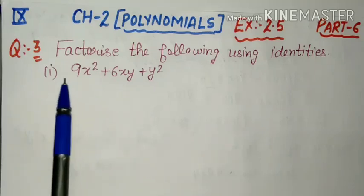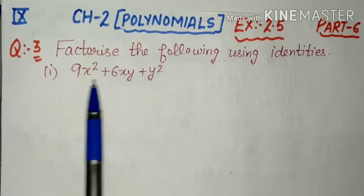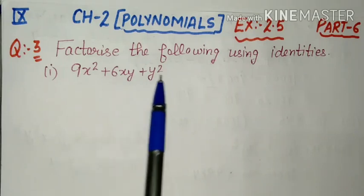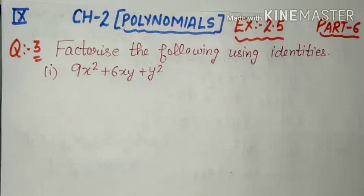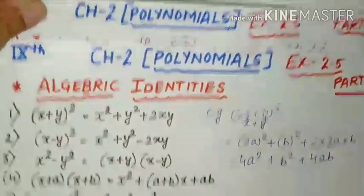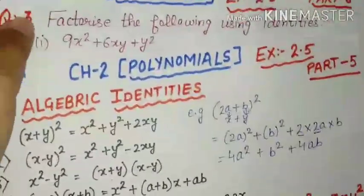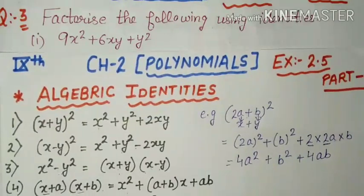Dekho isme kya given hai hamare paas: 9x² plus 6xy plus y². Isme do terms hain jinke square given hain, ek simple term given hai. Identities humne fifth part mein ki thin. Aap fifth part mein identities dekh sakte ho. Identities ka use karke hame check karna hai kaun si identity isme use ho rahi hai. Hamare paas 9x² plus 6xy plus y² given hai. Dekho, hamare paas square wali yeh 3 identities hain — first, second, third.